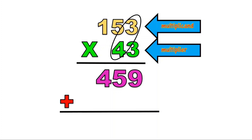Now, let us proceed to the tens place of the multiplier, which is 4, and multiply by the ones place of the multiplicand, which is 3. 3 times 4 is 12, remainder 1.